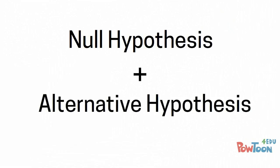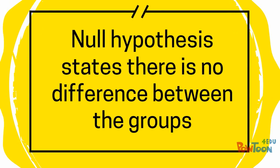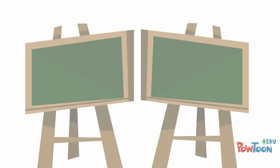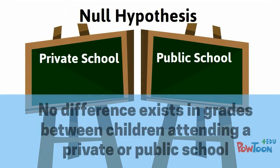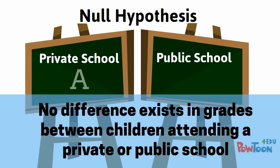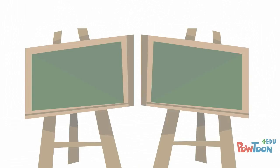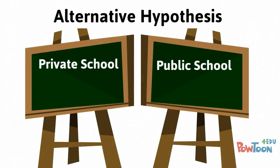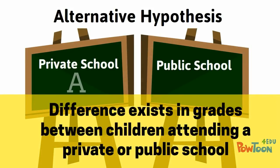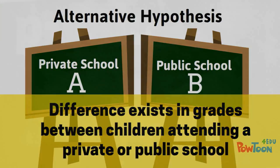The test uses a null and alternative hypothesis. The null hypothesis states there is no difference between the groups. For example, the null hypothesis states that no difference exists in the grades between children attending a private or public school. The alternative or research hypothesis states a difference in grades between the two school systems exists.